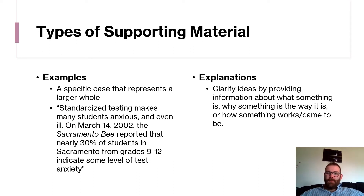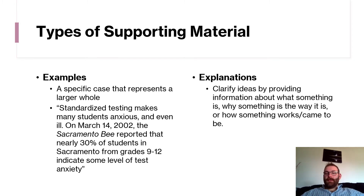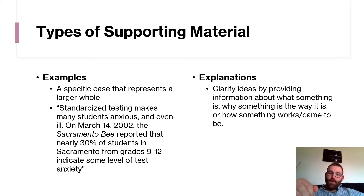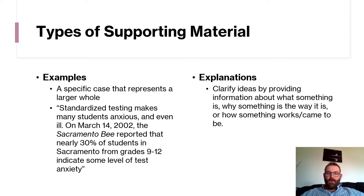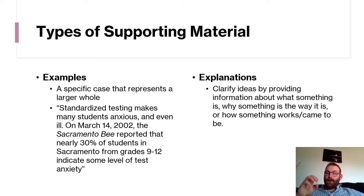First, an example is a specific case that represents a larger whole. Say you were informing your audience about standardized testing — you might use Sacramento as the example to represent a larger level. You'd say something like 'Standardized testing makes many students anxious and even ill. On March 14, 2002, the Sacramento Bee reported that nearly 30% of students in Sacramento from grades 9 through 12 indicate some level of test anxiety.' You're supporting your claim with that specific example.